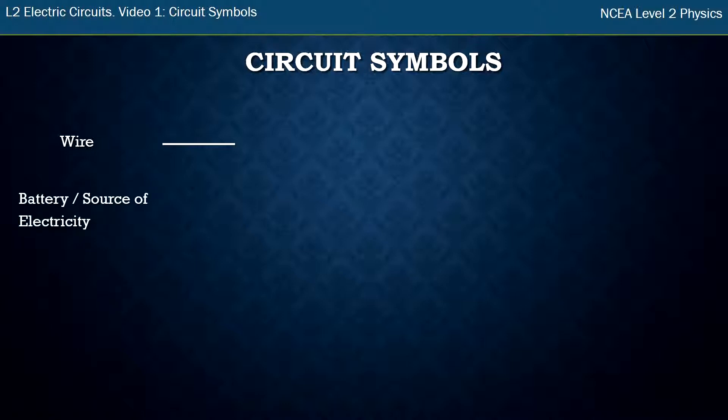Then we need some sort of source of electricity or a battery. So the symbol for that is two vertical lines and one's longer than the other. The longer line is the positive and the shorter line is the negative, and we'll talk about that in a later video a bit more.